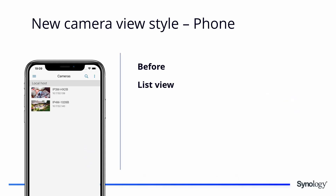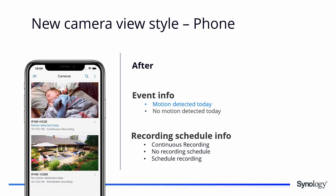There have also been improvements to the viewing style. Previously all events were available only in list view. Now they are also available in a new icon viewing style giving you a better overview. You can see more information including event info — such as whether motion was detected — and recording schedule info showing whether there was continuous recording, no schedule, or a defined recording schedule.